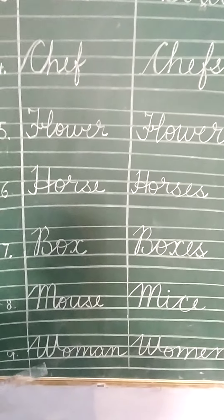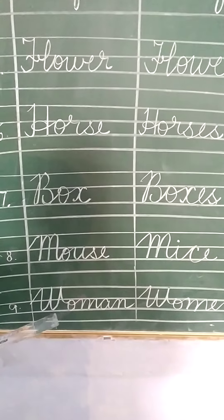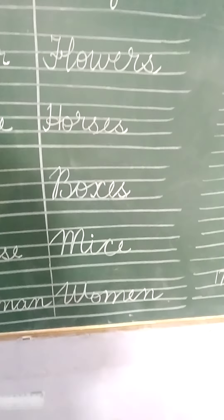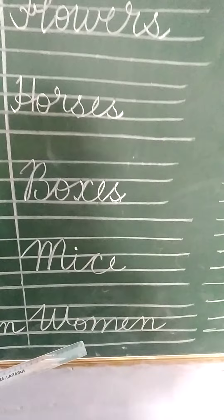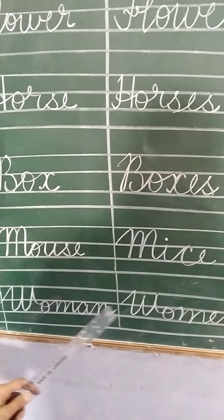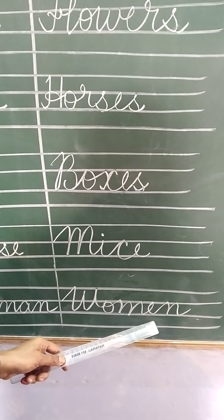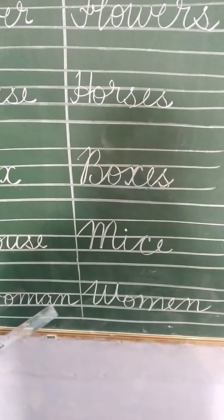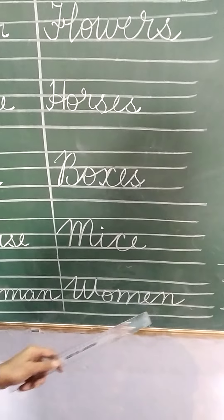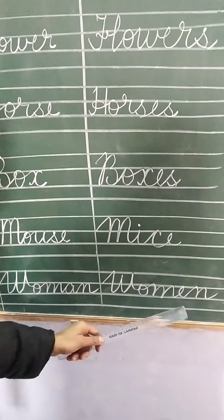Woman — W, O, M, A, N. When a lady is single, we call her woman. If there are more than one, we replace the A with E and write M, E, N — so woman becomes women: W, O, M, E, N.